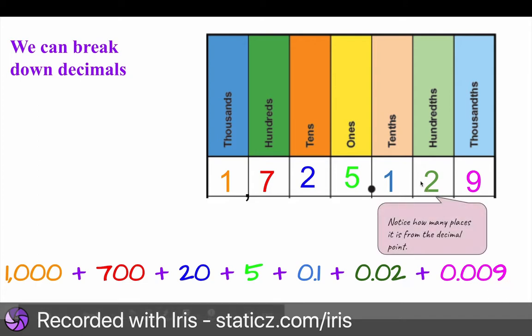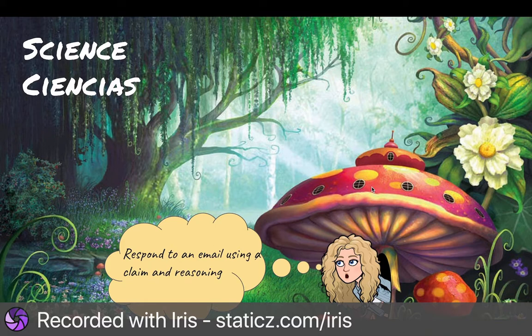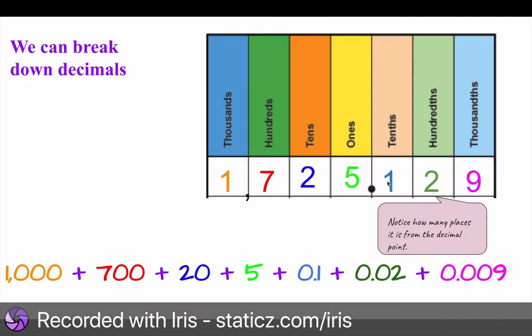So make sure with decimals, you notice how many places away from the decimal point it is. If it's right next to it, it's tenths. If it's to the right of it, it's hundredths. If it's all the way to the right of it, it is thousandths.